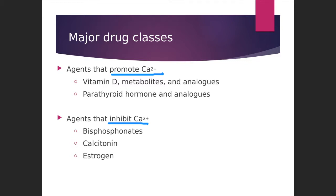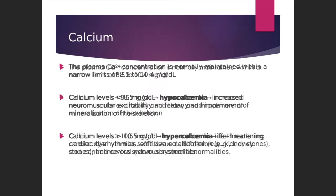Now if you see the levels of plasma calcium, the normal levels range from 8.5 to 10.5 mg per deciliter. There are two conditions related to this normal range. If the levels of calcium drop below 8.5 mg per deciliter, this condition is known as hypocalcemia. And if the levels are more than 10.5 mg per deciliter, then this condition is known as hypercalcemia.